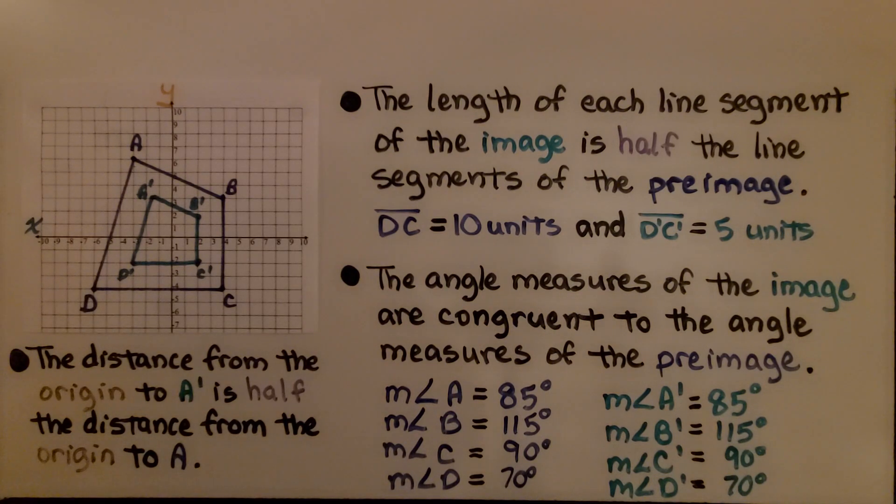The angle measures of the image are congruent to the angle measures of the preimage. The measure of angle A is 85 degrees and the measure of angle A prime is 85 degrees. They're all congruent to each other to the corresponding angles.